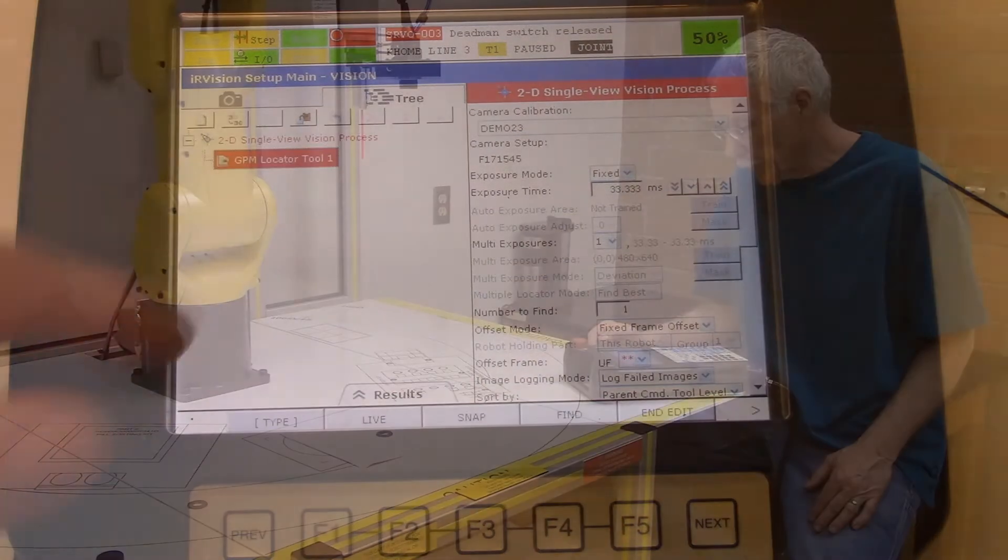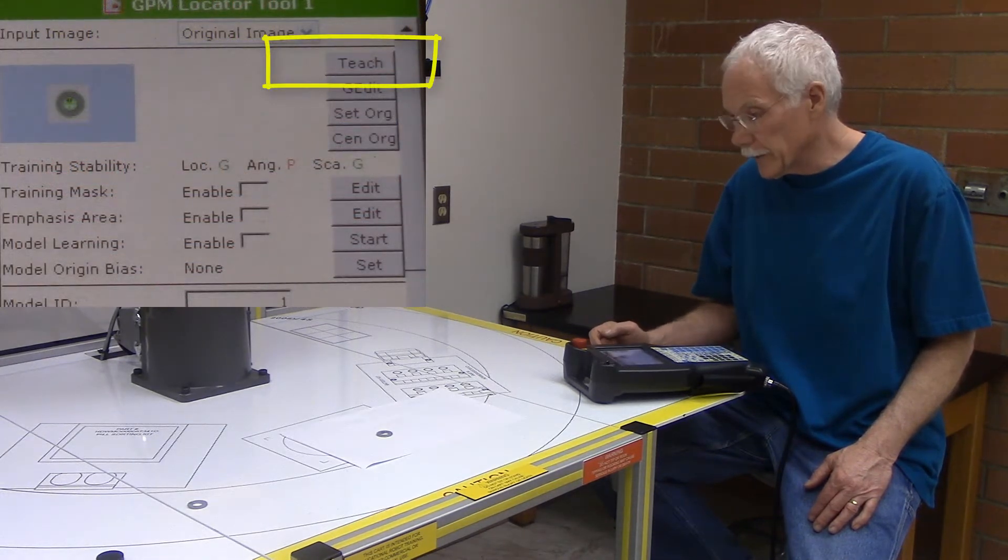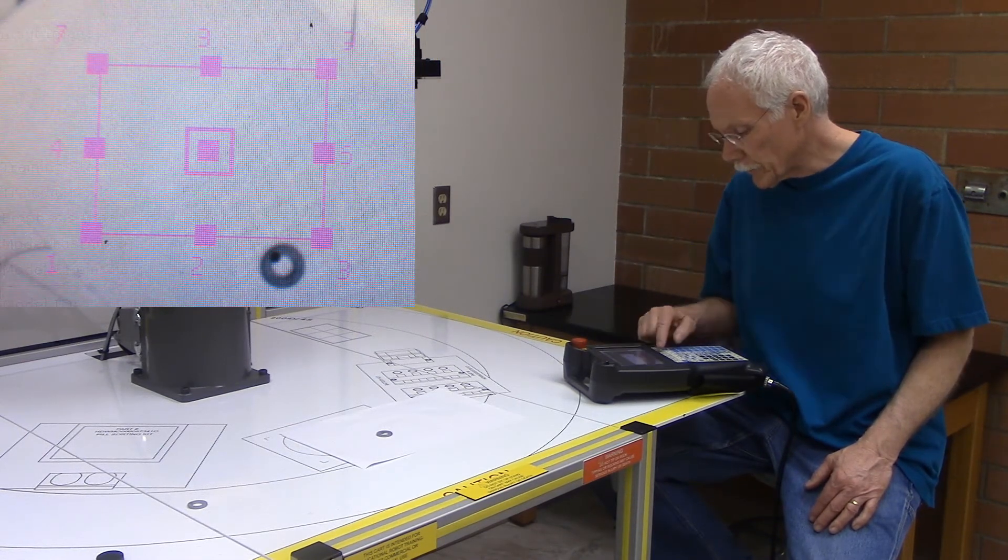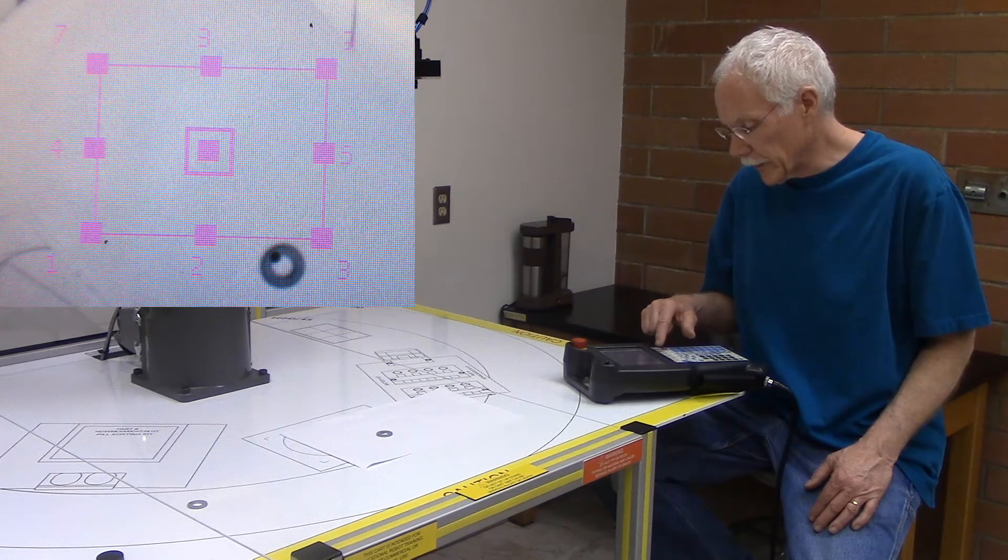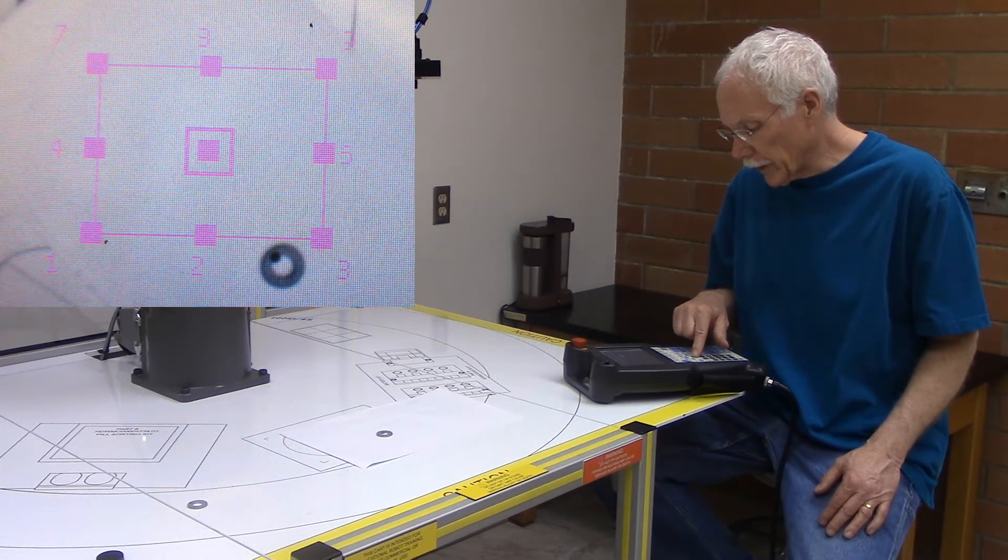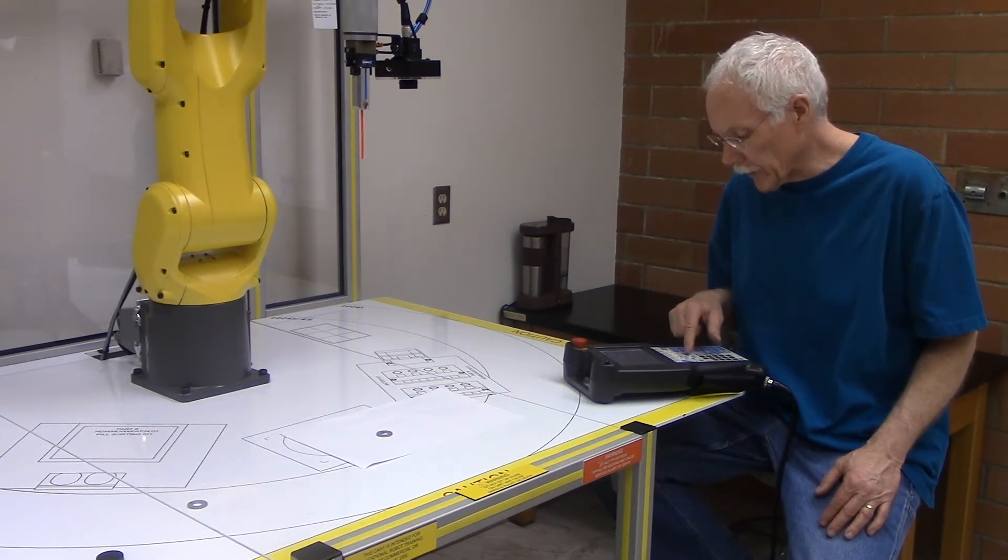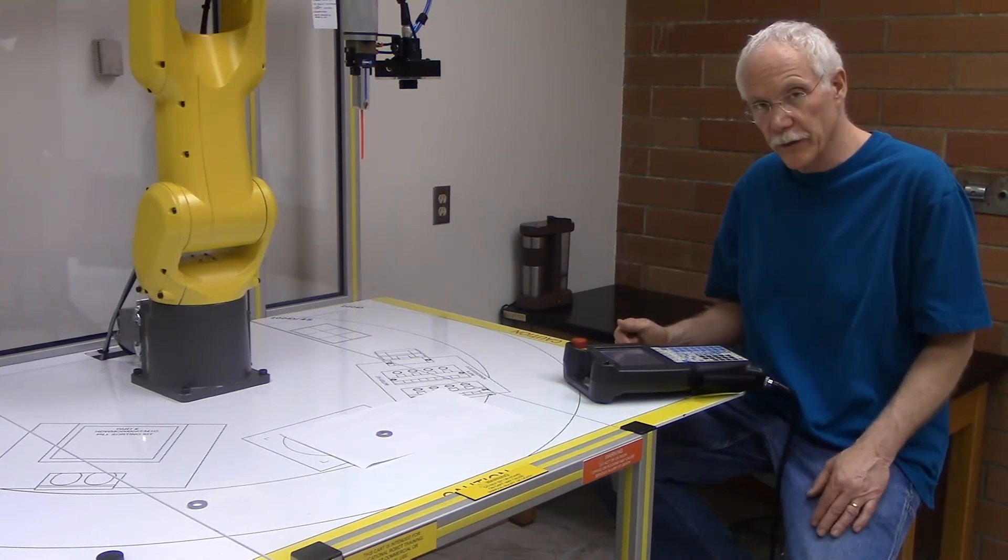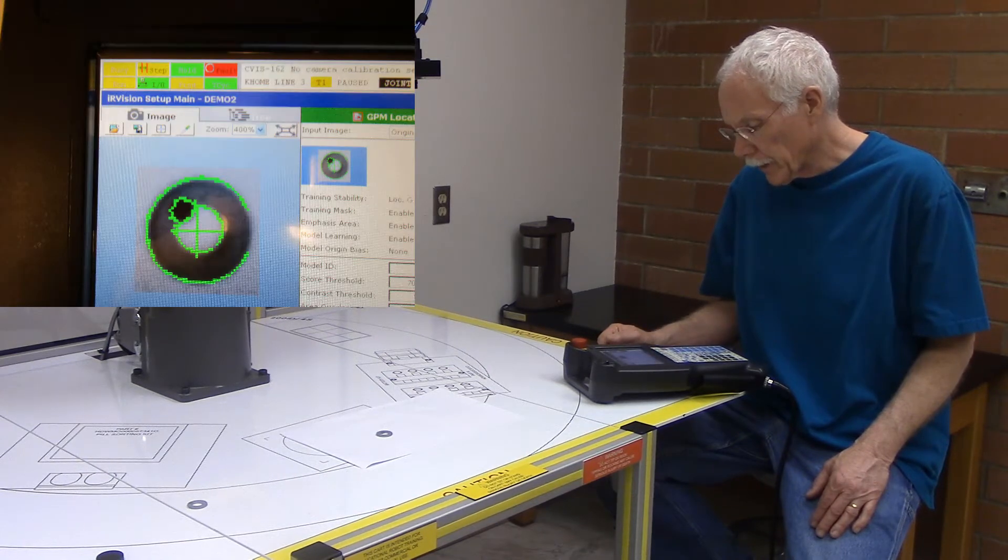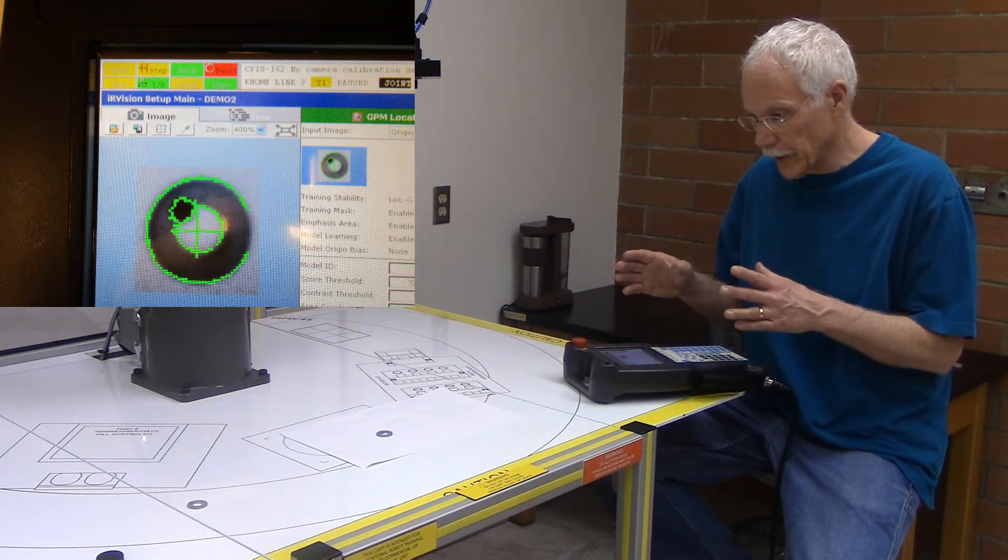And then the next thing is to select GPM locator tool. We're going to teach the robot this washer. So I'm going to select the teach tool. It's going to go ahead and look for it and snap the picture. And then I'm going to have to move the window over my object. I'm happy with the center of that. I could change the size of the window. Once I'm happy with that, I'm going to select OK.